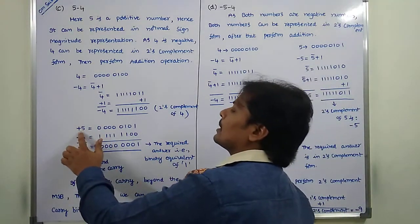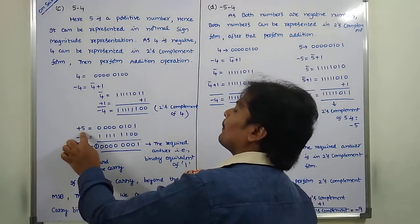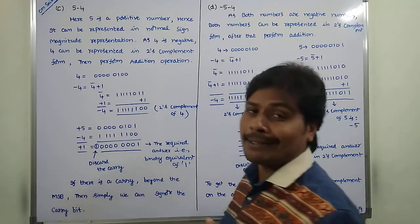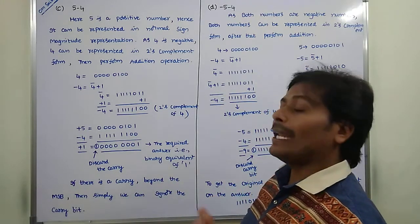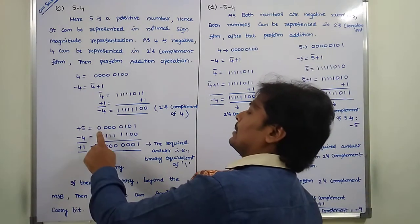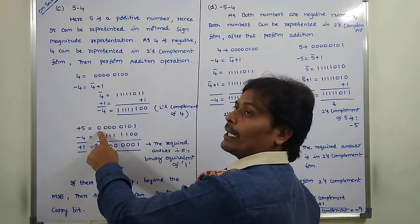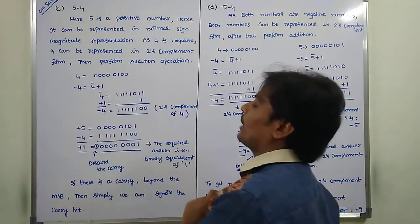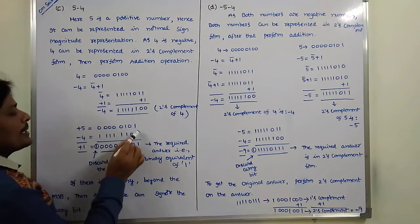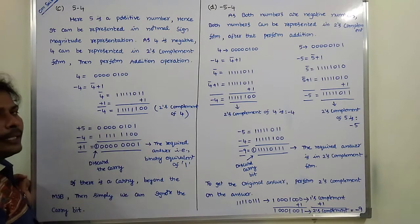Now 5 can be represented as plus 5. The sign bit is 0 to represent the positive number, and 5 is represented as 0101. Since we use an 8-bit register, any vacant places are filled with 0. This 0 is the sign bit; if the sign bit value is 0, it always represents the positive number. So we now have the binary form of plus 5 and the binary form of minus 4, with the result in two's complement form.